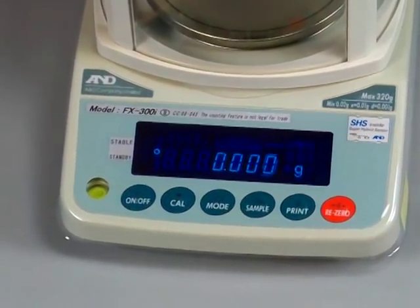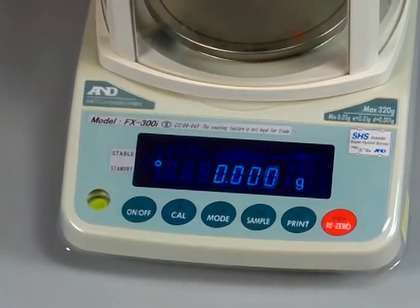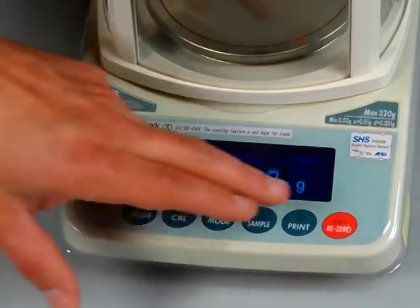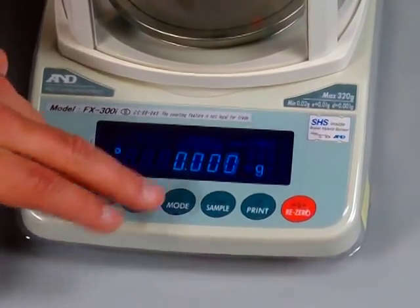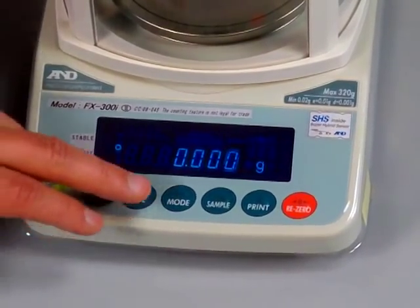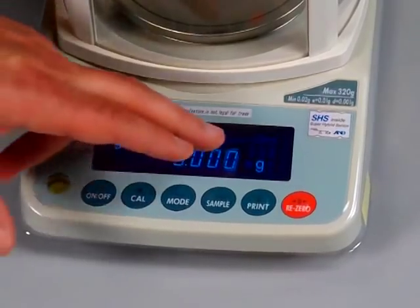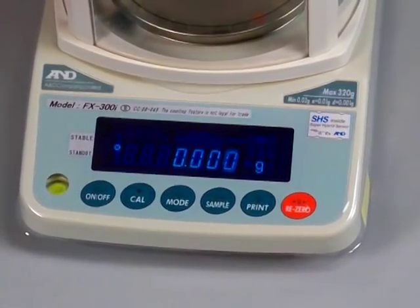Some other nice features about the balance: you'll notice that we have six keypad buttons. It's very simple. We have an on-off, a cal, a mode button. We would press the mode button to go through each of the weigh modes. Right now the balance is in grams.